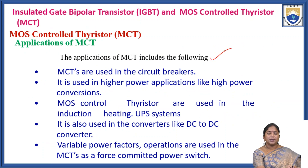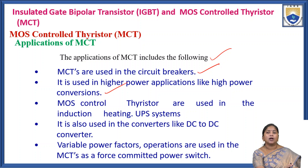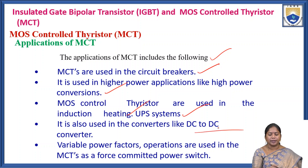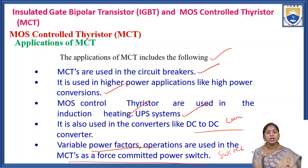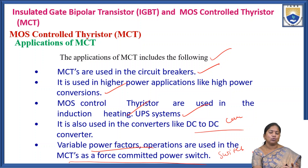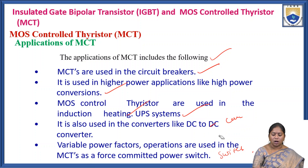Applications of MCT: MCTs are used in circuit breakers and high-power conversion applications. Metal Oxide Semiconductor controlled thyristors are used in induction heating and UPS systems. They are also used in converters such as DC to AC converters, variable power factor operations, and as a force-commutated power switch.